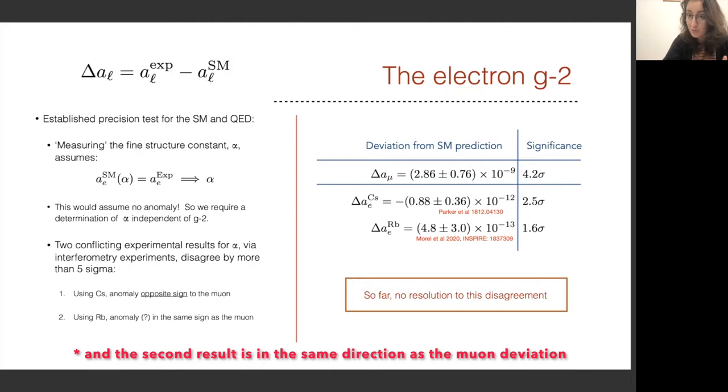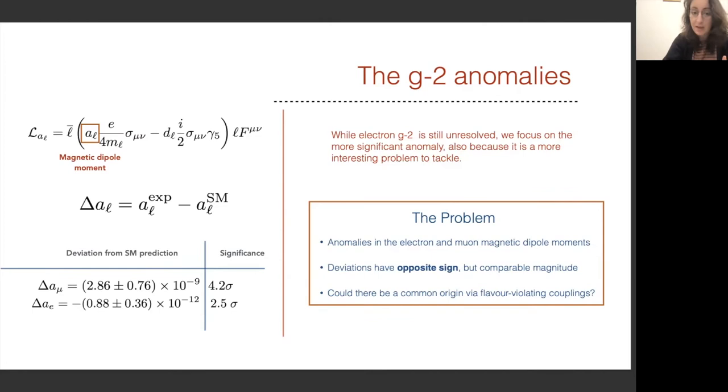However, so far there's no resolution to the disagreement between these two experiments. So for now, what we're going to do is assume that while the electron g minus 2 is still unresolved, we'll focus on the more significant anomaly, also because it's a more interesting problem to try and tackle. The reason? Well, the g minus 2 of the muon and the g minus 2 of the electron being in opposite signs but comparable magnitude, perhaps this indicates a common origin via flavor-violating couplings to an exotic field.